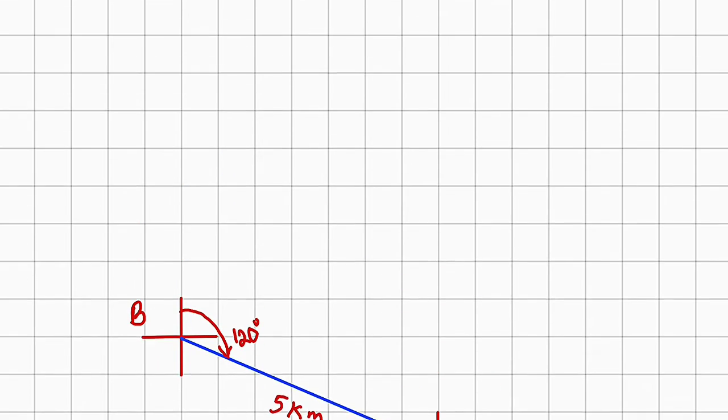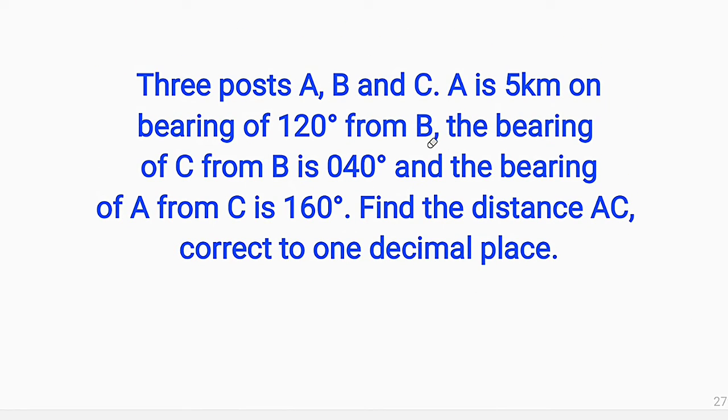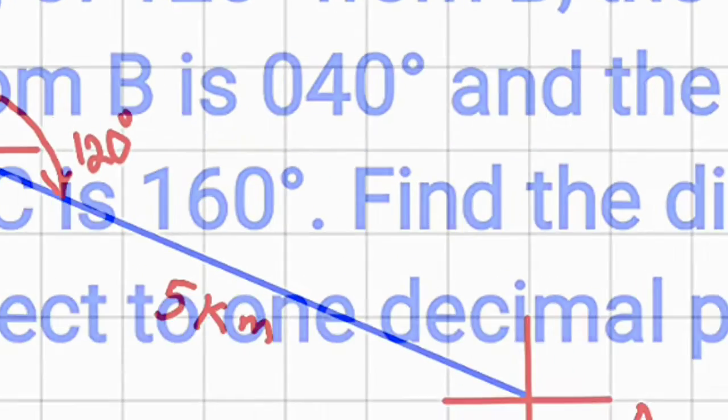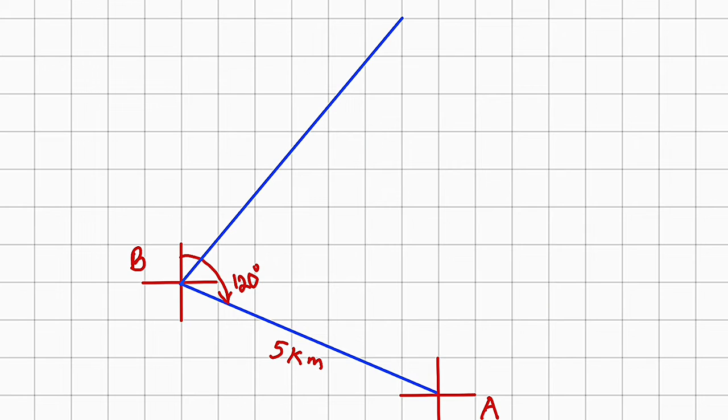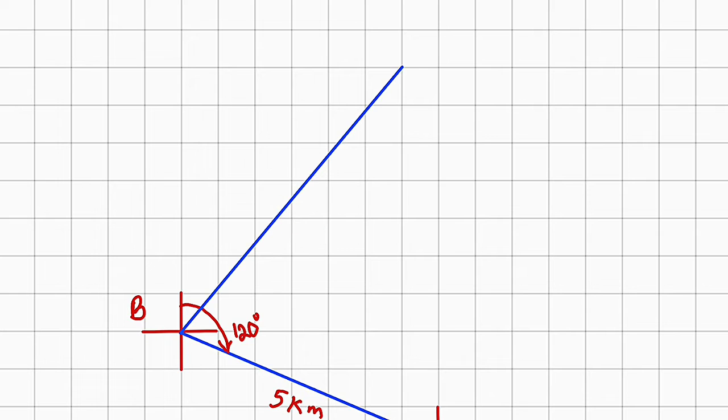Let's continue reading the question. It states that the bearing of C, another point, from B is 40 degrees. So we need to also construct another 40 degrees from B down to C. So from the same B, 40 degrees must be in the first quadrant, roughly somewhere here. So let me do that. Something like this. Remember, we don't know the distance. This is why I decided to draw this line very long.